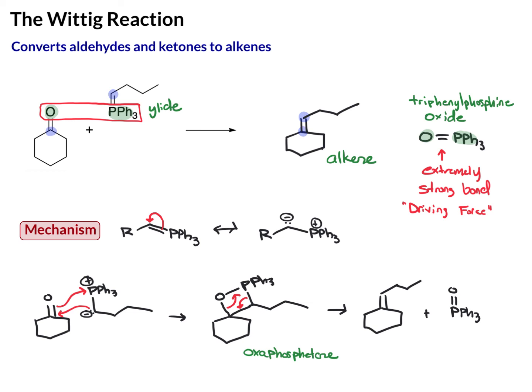When doing this, I often recommend you count the atoms, especially on the ylide, to make sure you don't lose any. I'm going to put an orange dot on the nucleophilic carbon and count: one, two, three, and four carbons. In our intermediate we still have that carbon: one, two, three, and four. In the product, there's that same carbon: one, two, three, and four. That just assures we don't lose any carbons or add any unnecessary carbons.